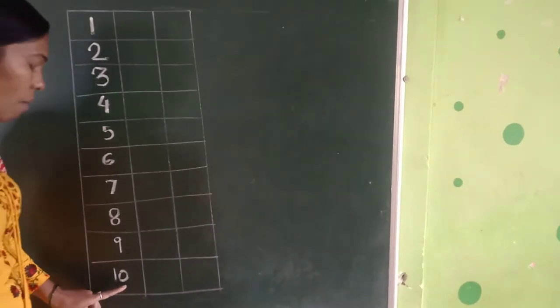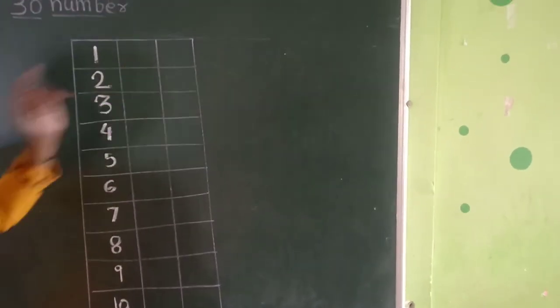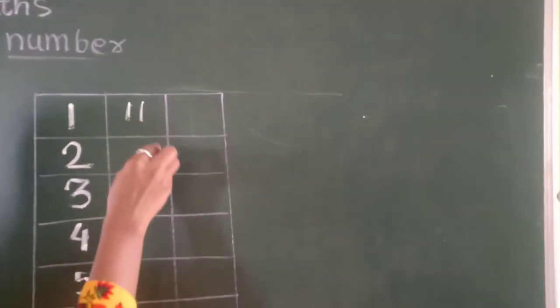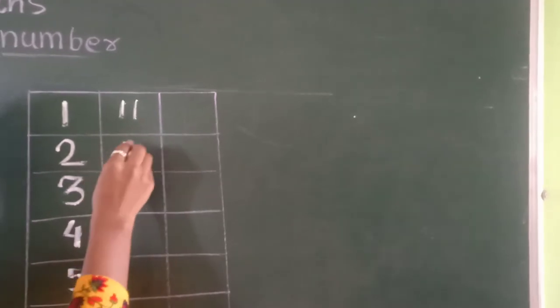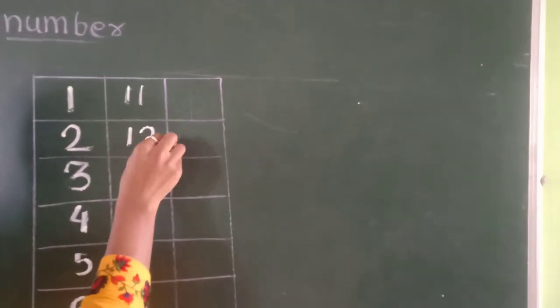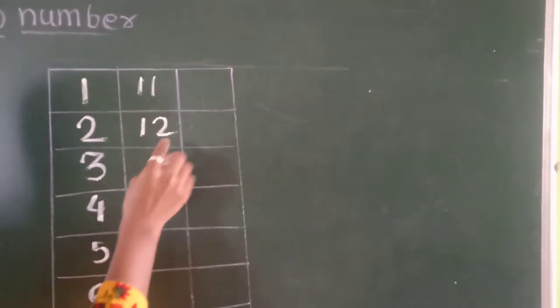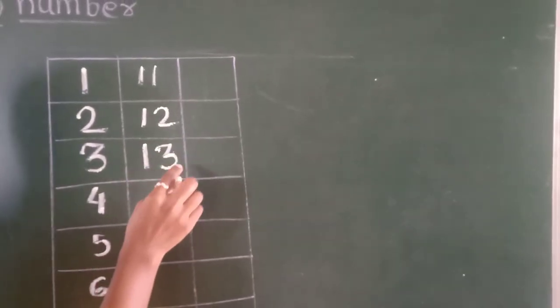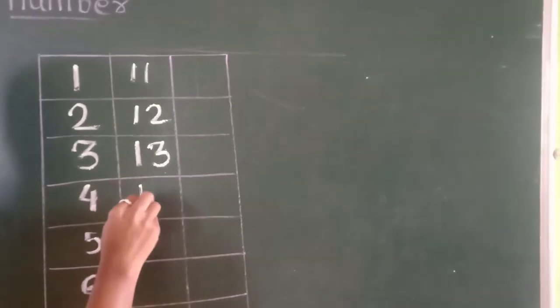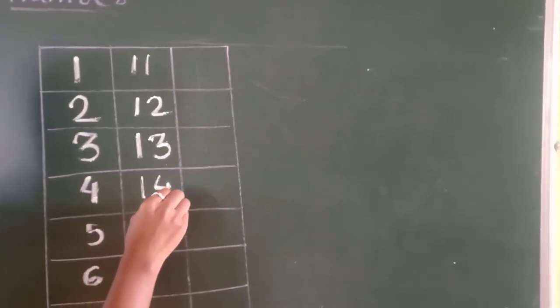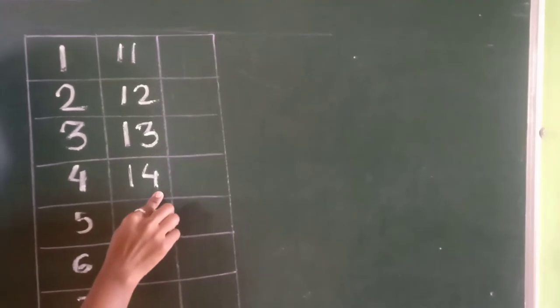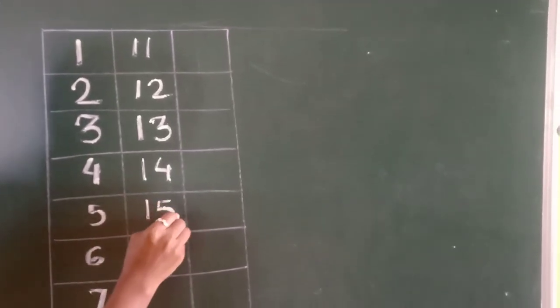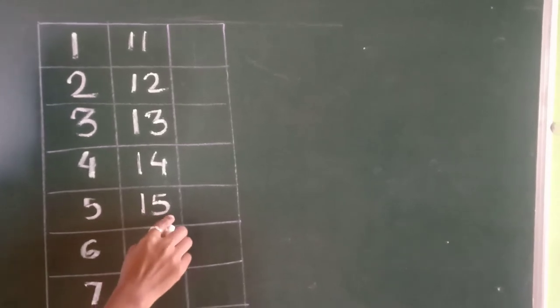So kids, which number comes after 10? 11. 1, 1, 11. Then 1, 2, 12. 1, 3, 13. Then 1, 4, 14. After that 1, 5, 15.